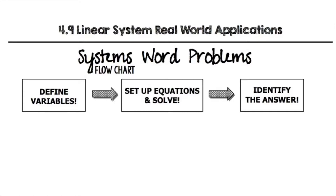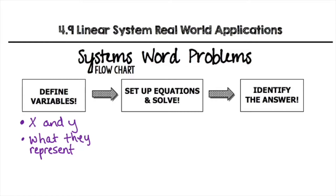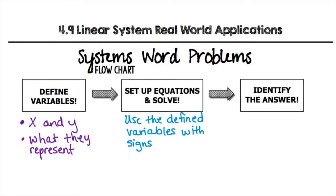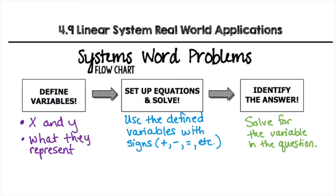The first thing you want to do is define your variable. If you have two different things in the word problem, you want to give the first item the x value and the second item the y value, just like x comes before y in the alphabet. Say what they each represent so you don't get them confused. Then set up your equation using those defined variables with signs like plus, minus, equal sign, etc., and solve for whatever variable they're asking you to find.